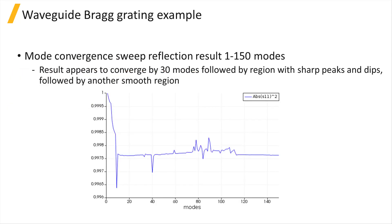Using the Mode Convergence Sweep tool and sweeping up to 150 modes in each cell, we can see that the reflection, absolute value squared of S11, seemingly converges by 30 modes, but the results start to show sharp peaks and dips as the number of modes increases. And then above 118 modes, the results are smooth again.